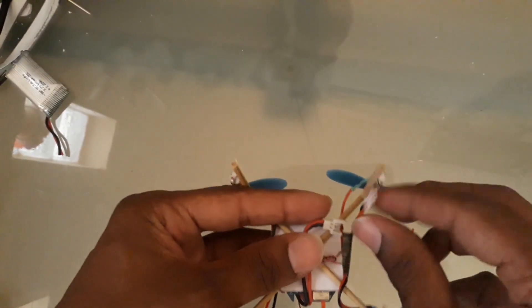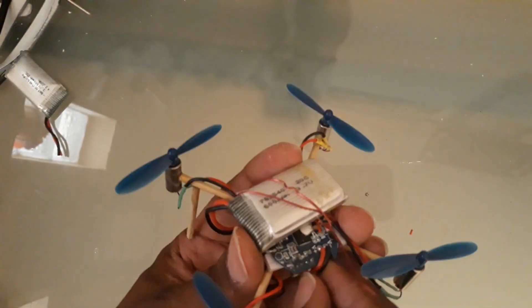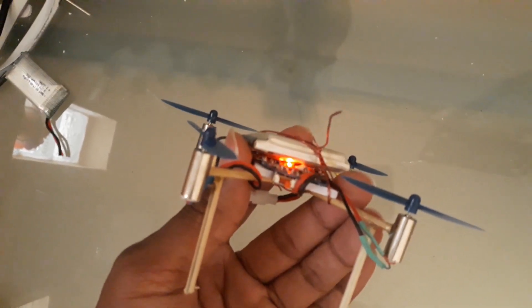Place the battery at the top of the circuit board to make the center of gravity in the Z-axis level with the propeller to make it more stable. Let's try it now.